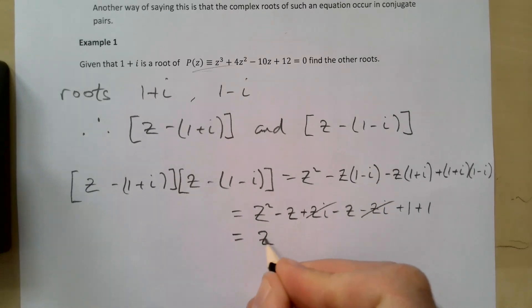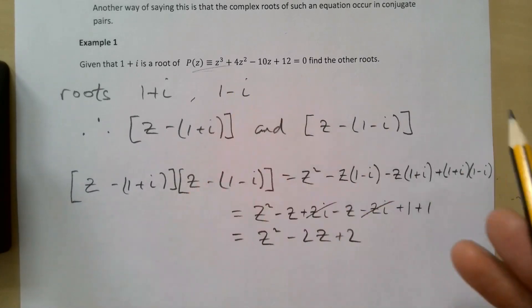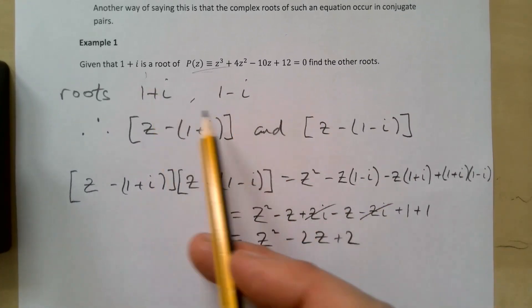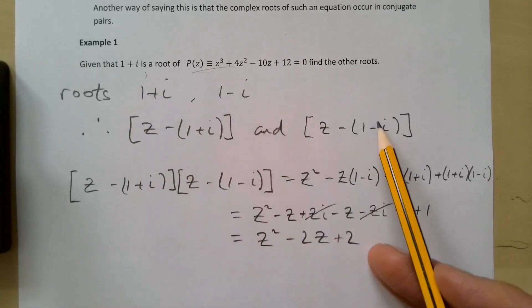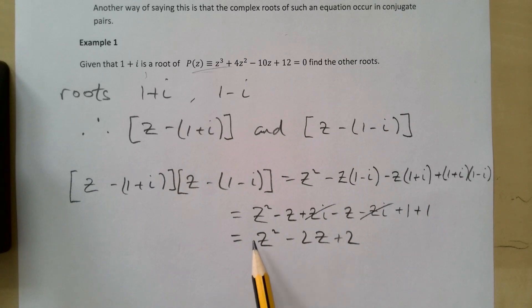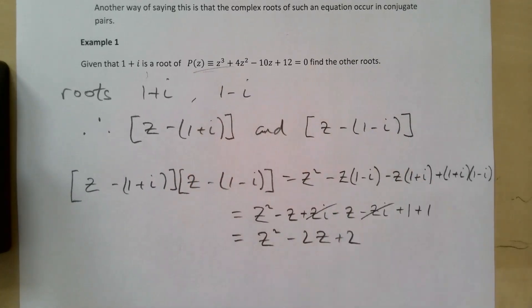We're there, and it's a cubic so it should have three factors. These are two of the factors. We've multiplied them together and we've got a quadratic. If we now divide this quadratic into this cubic, it should then give us our final factor and that's everything we need to do.